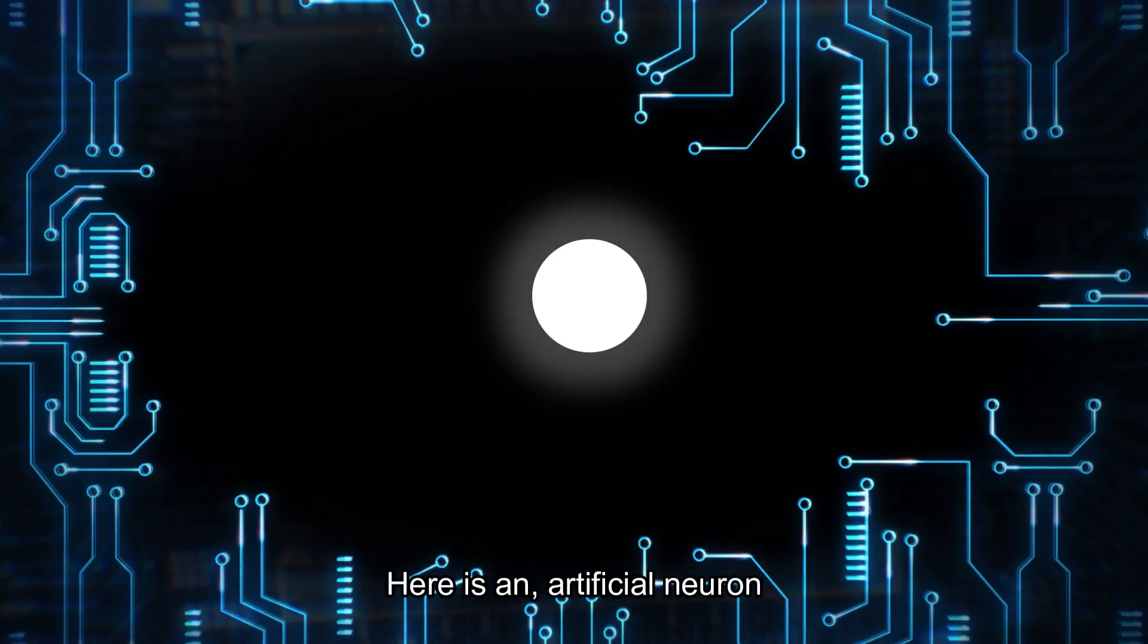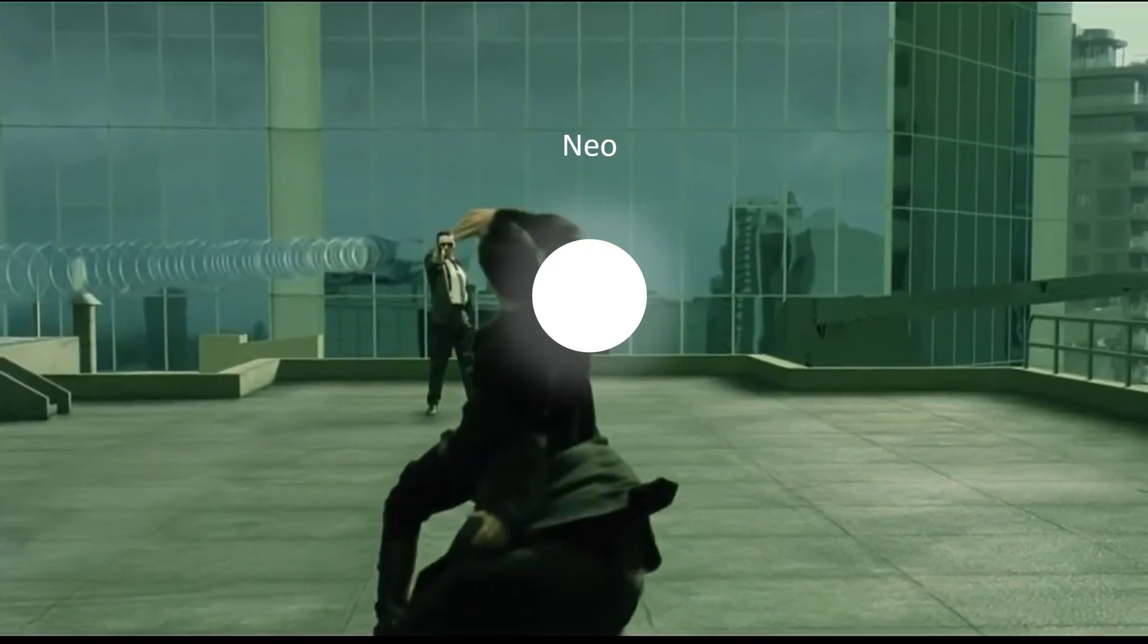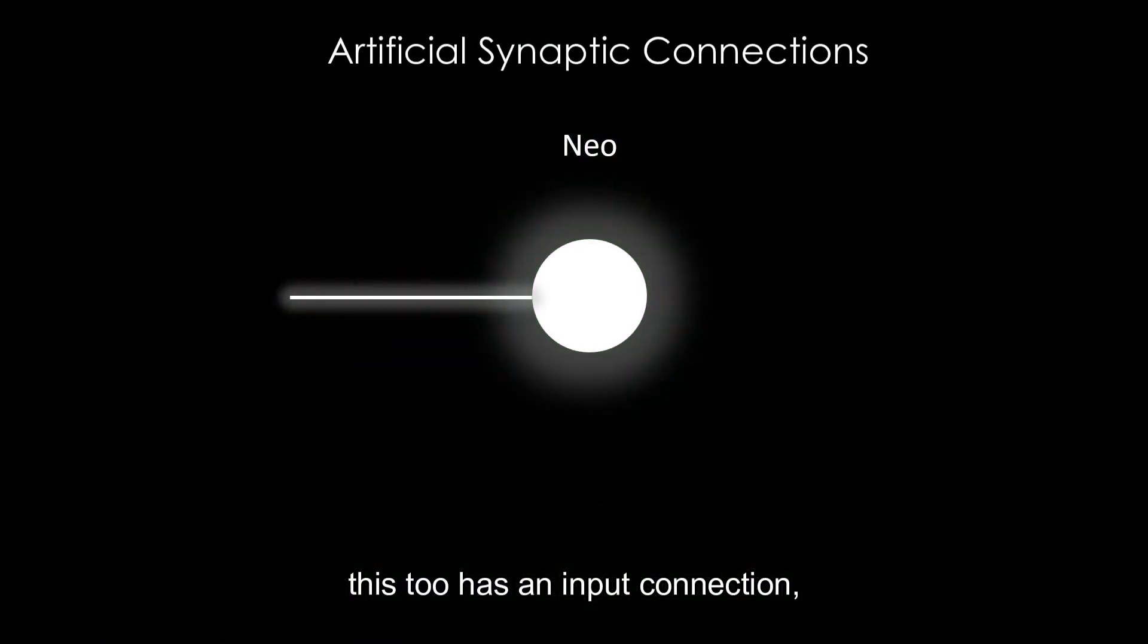Can we give this ability to a machine? Let us try. Here is an artificial neuron. Let us call him Neo. Just like a biological neuron, this too has an input connection and an output connection.